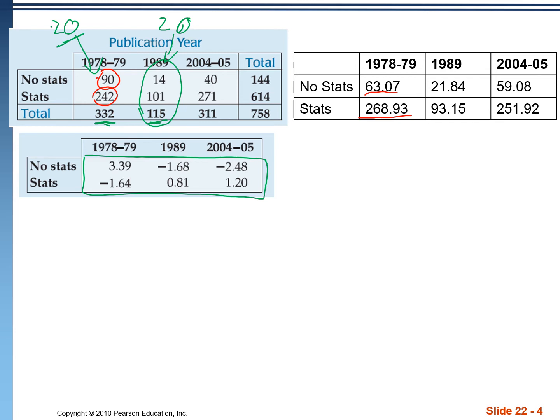So higher residuals mean that those cells are contributing more to that chi-squared value. If we put this into the test in our calculator, we get a chi-square value of 25.28 — that's the sum of the chi-square values for all of the individual cells. When we see large residuals, it means that individual cell added a lot to that 25.28; a small residual like 0.81 didn't add very much.